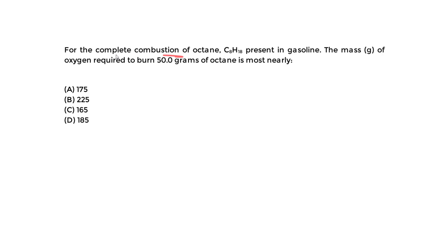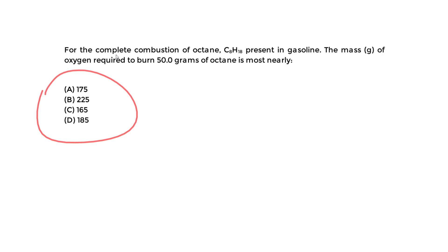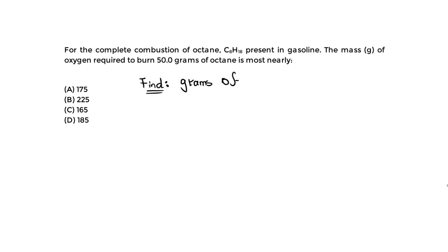We're told for the complete combustion of octane, given by the chemical formula C8H18, present in gasoline, the mass in grams of oxygen required to burn 50 grams of octane is most nearly what? So we want to find the mass of oxygen required to burn 50 grams of octane, and we need the final answer in grams of oxygen — let's call it O2.